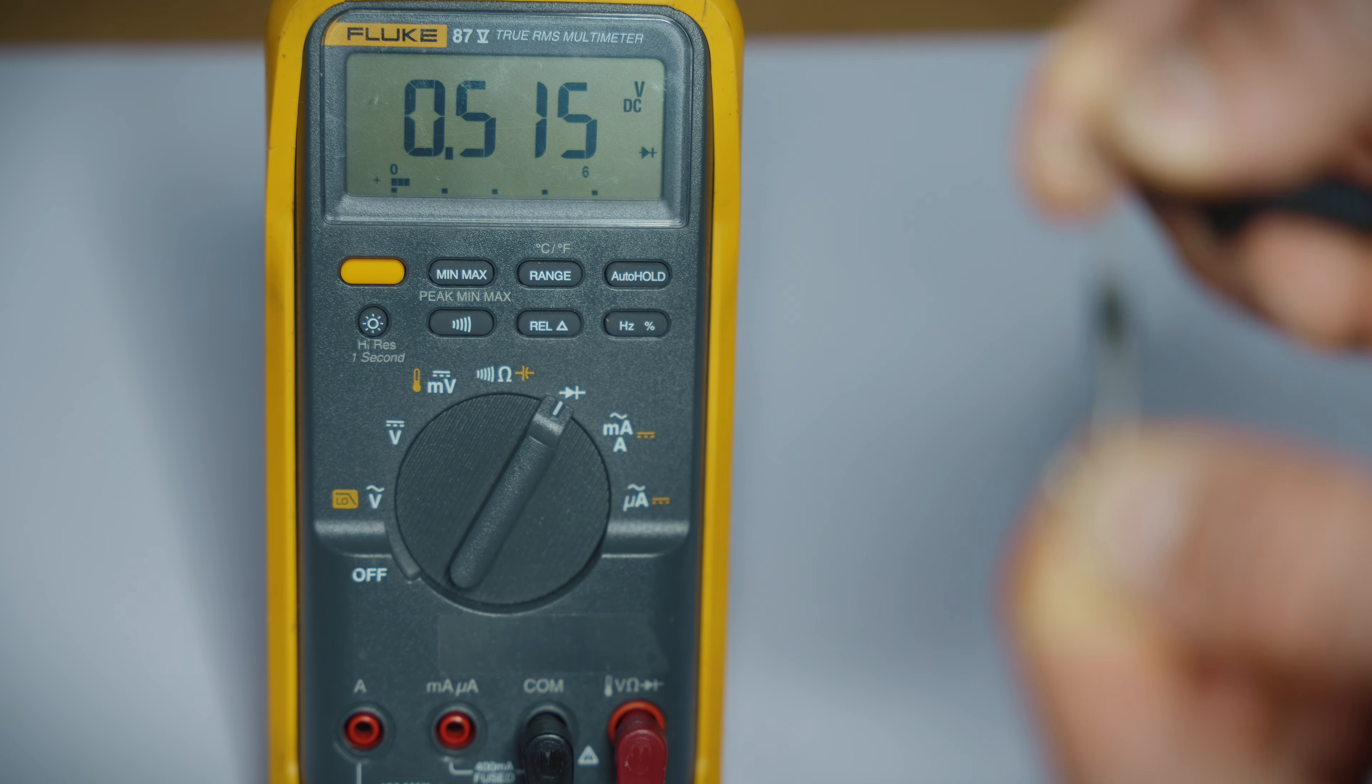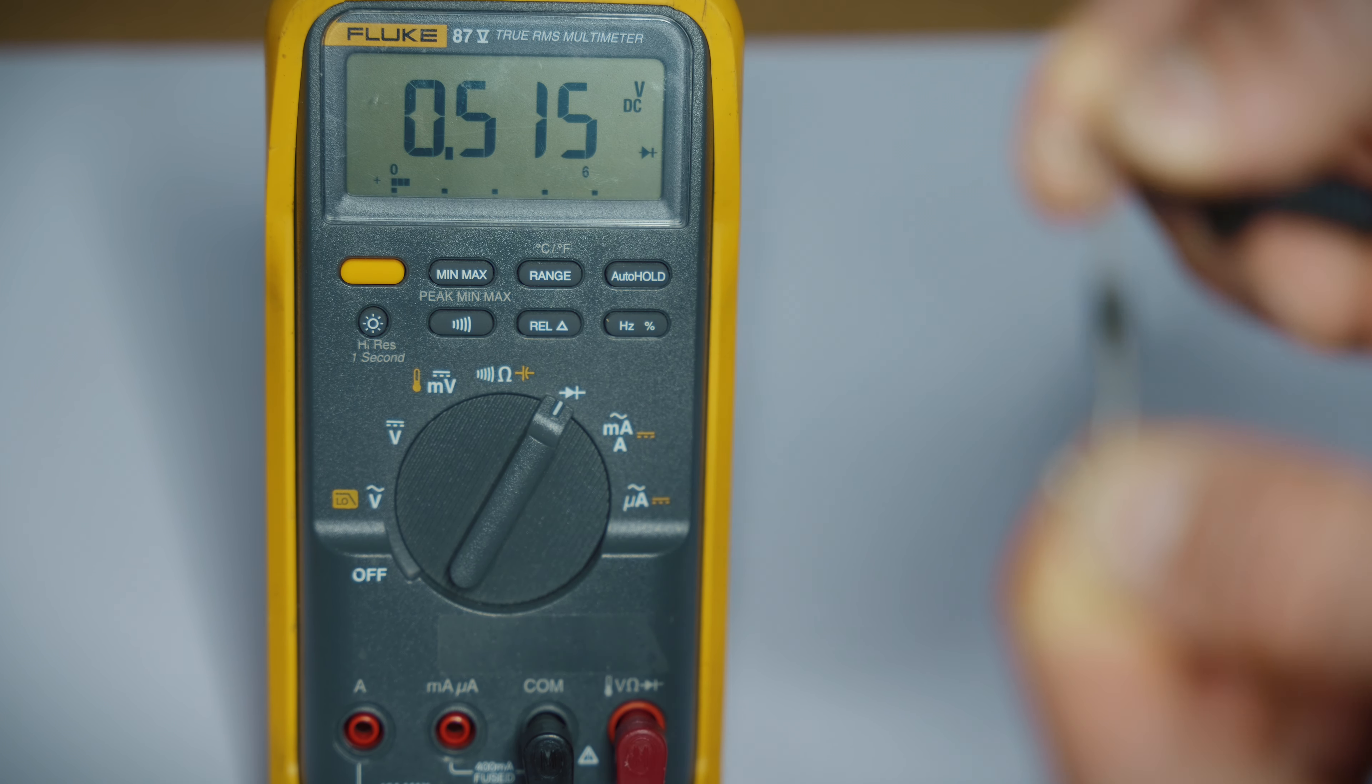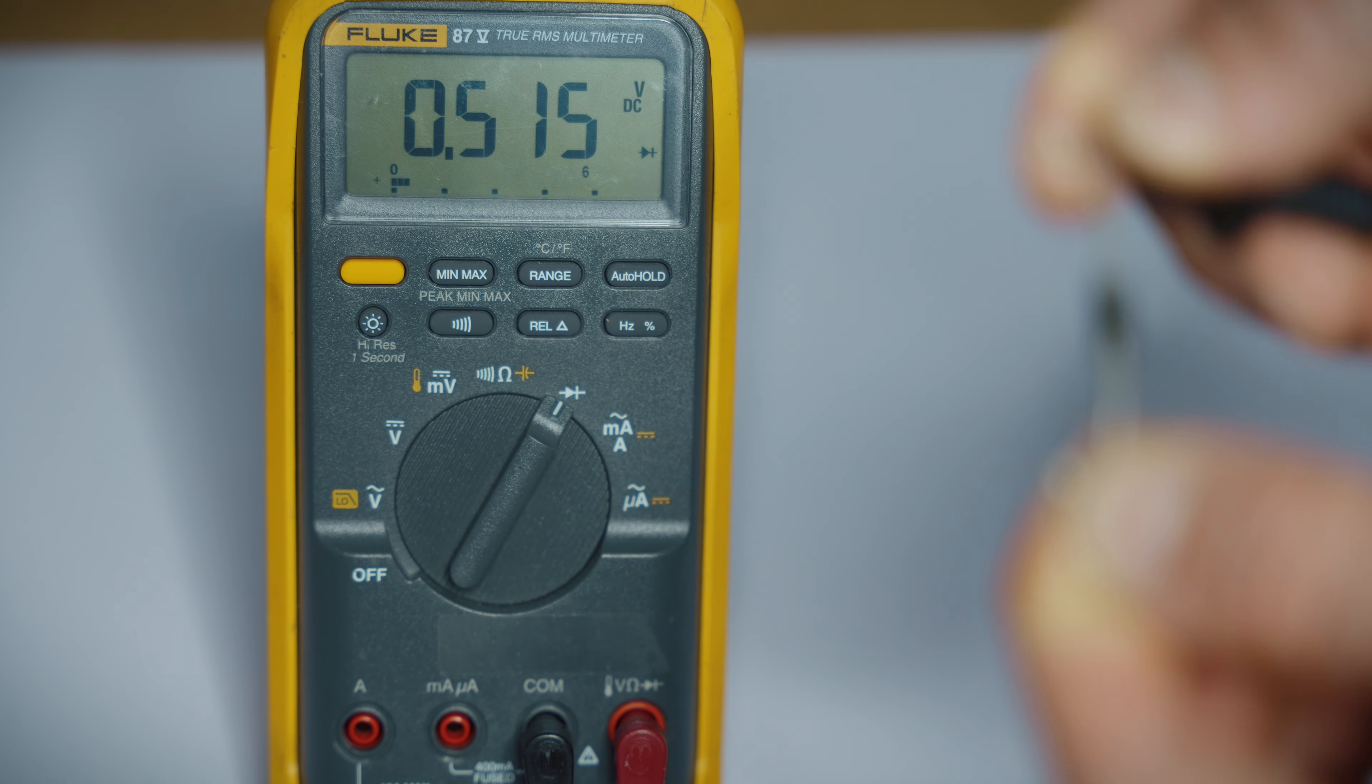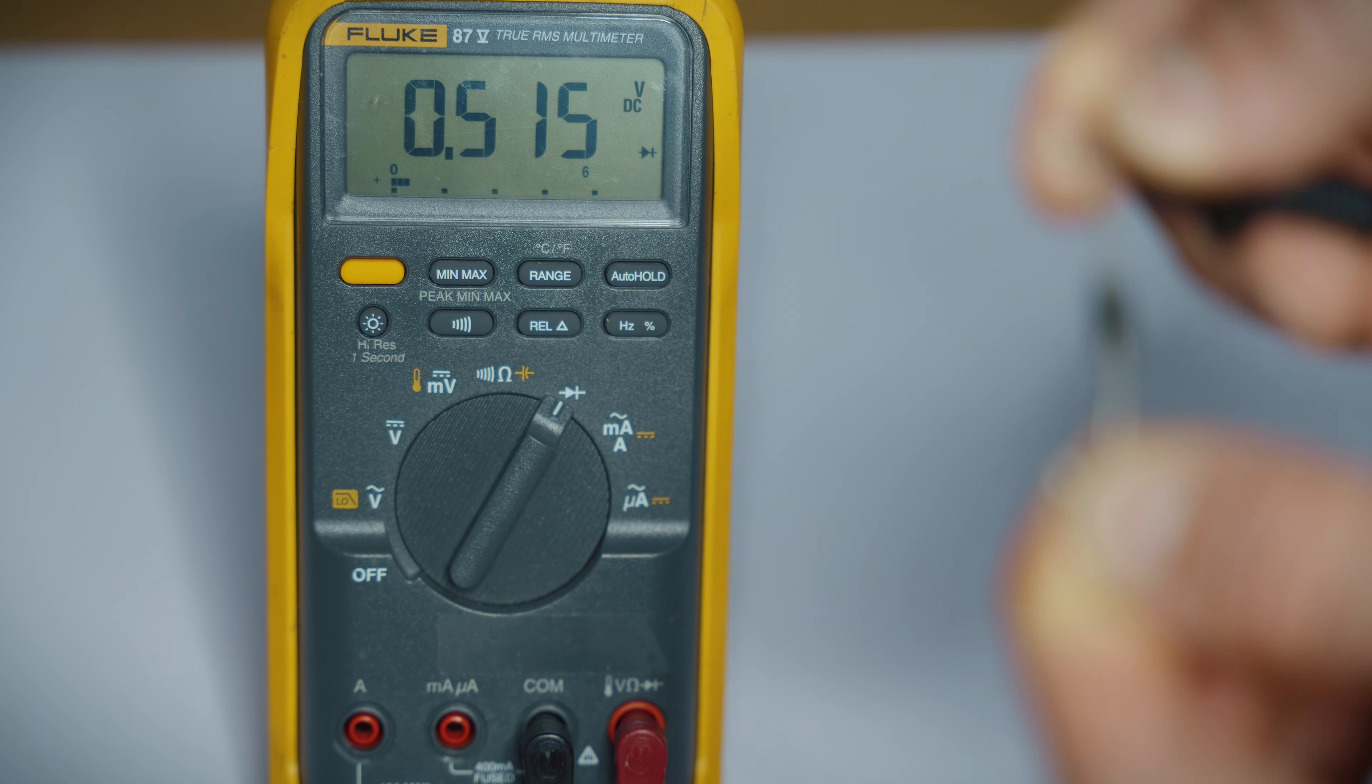To check a diode, you're going to have the red probe on one lead and the black probe on the other. And in one direction, you're going to get OL. If you flip the diode over so the red and black leads are switched, you should get a reading. It will be something in volts DC. If you get a reading in both directions or an OL open in both directions, then your diode is bad.